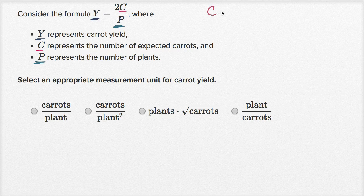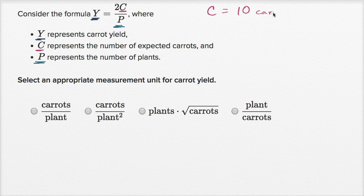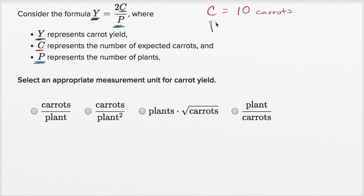Let's just say that C is equal to 10 carats, and I'm just making these numbers up, just so hopefully it makes sense what I'm about to do. And let's say that P is equal to 30 plants.